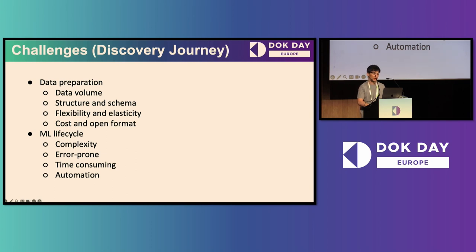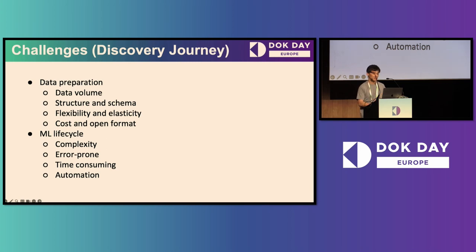For the ML part, complexity is always one of the challenges. The ML lifecycle is very complicated and requires collaboration from multiple teams. The more people working on the same system, the greater the likelihood of errors and the harder it is to debug. The entire ML lifecycle is also a lengthy process, so you need a system flexible enough to adjust resources based on the workload. Last but not least is automation — we definitely want an automation mechanism to speed up the ML lifecycle, with mechanisms that are easily manageable and applicable to various kinds of tasks.